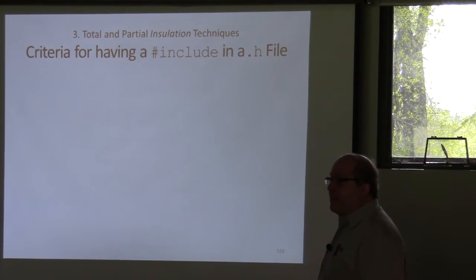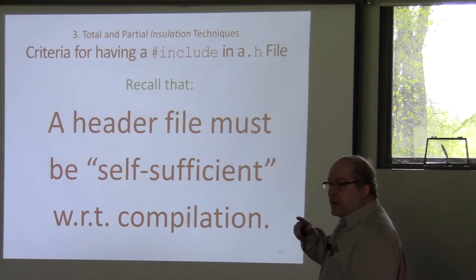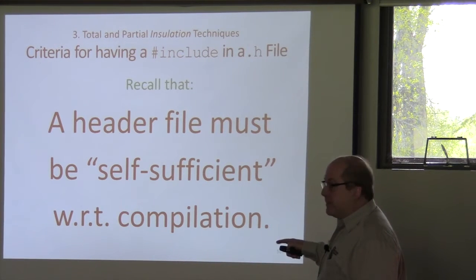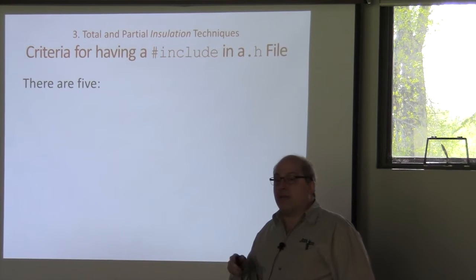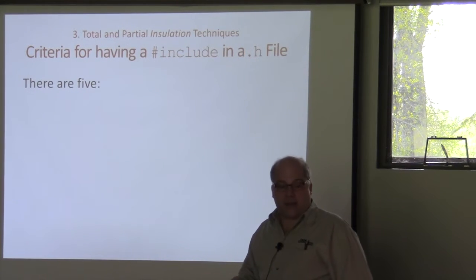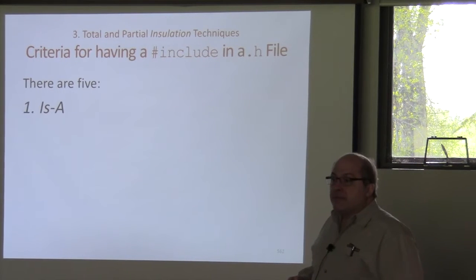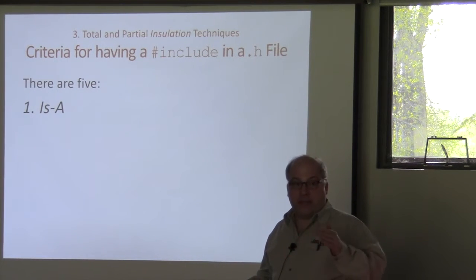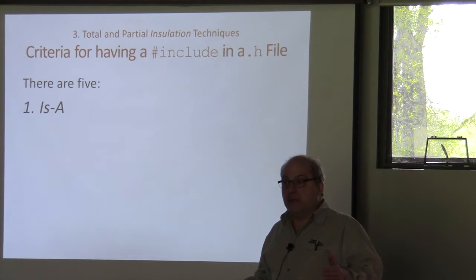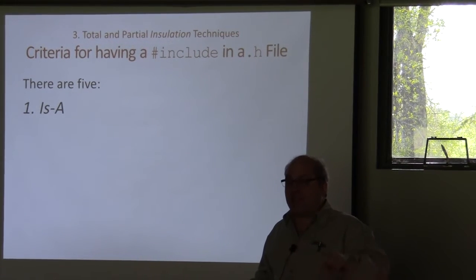Criteria for having pound includes in a header file: a header file must be self-sufficient with respect to compilation — that's why we include the component's header as the first substantive line in its CPP file. There are five reasons commonly known for wanting to include a header in a header. First: if circle is a shape, shape.h is always included in circle.h — it's not even considered a transitive include because circle has to include shape. Second: if you have an embedded data member — has-a — like a box that has two points, you have no choice but to include point in the header file of box.